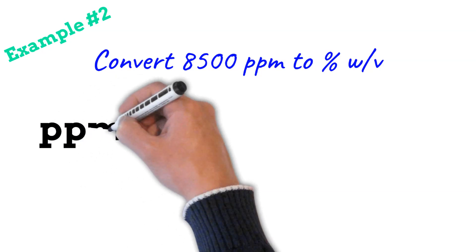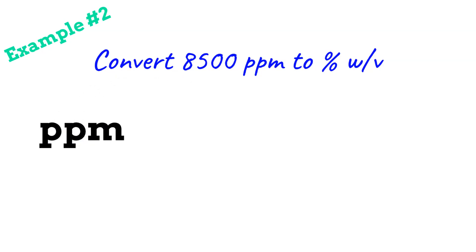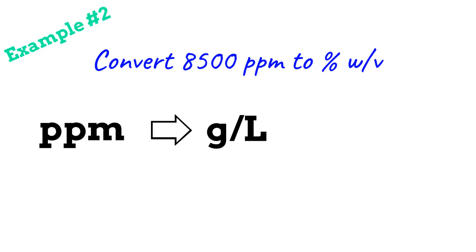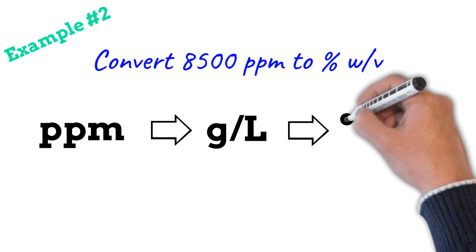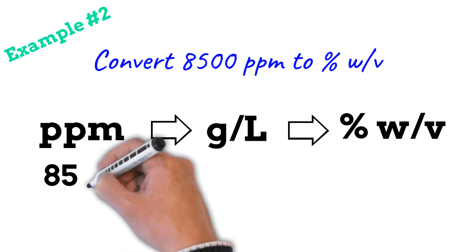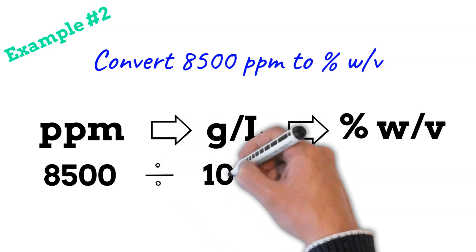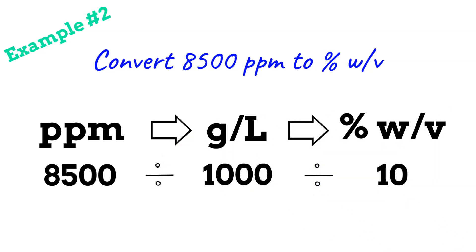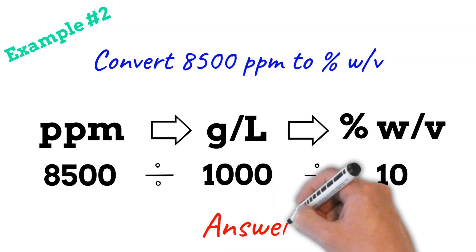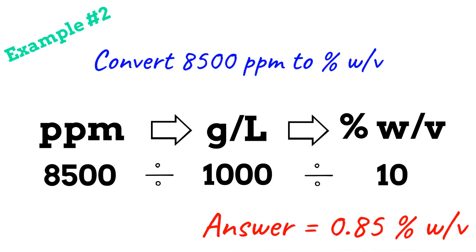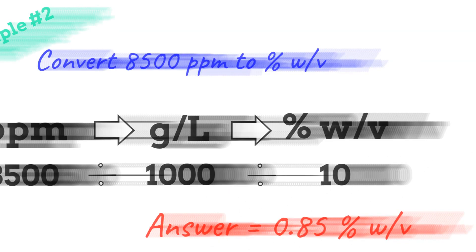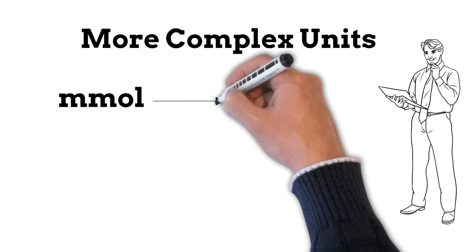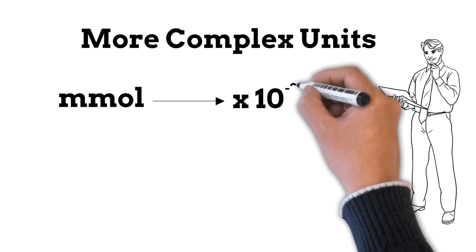Now let's convert 8,500 parts per million to percentage weight per volume. Take your parts per million, convert that firstly into grams per liter, and then convert that into percentage weight per volume. Take your value, divide it by a thousand, divide it by 10, and that gives you a percentage weight per volume of 0.85.